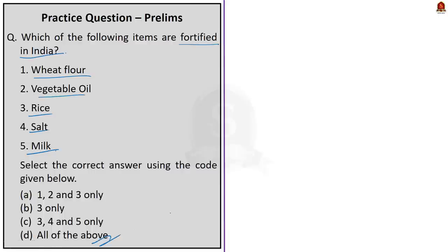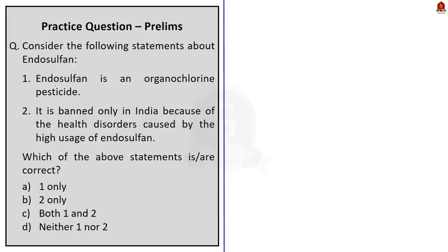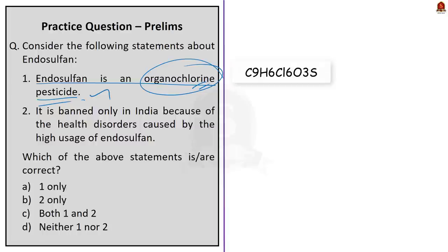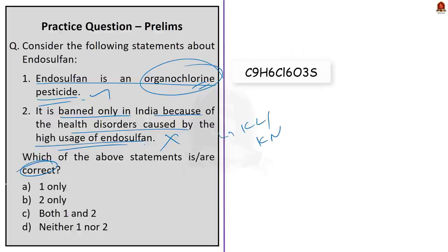Question 2 is about endosulfone — a two-statement question. Statement 1: endosulfone is an organochlorine pesticide. This is correct — the chemical composition of endosulfone also contains chlorine, hence it is called an organochlorine substance. The chemical formula of endosulfone is C9H6Cl6O3S. Statement 2: it is banned only in India because of health disorders caused by high usage. This statement is wrong — endosulfone is banned in many countries and some are phasing it out, but India is not among them. India agreed to a global consensus to ban endosulfone but has not implemented it yet — only Kerala and Karnataka have implemented the ban. So statement 2 is incorrect, and the correct answer is option A — one only.